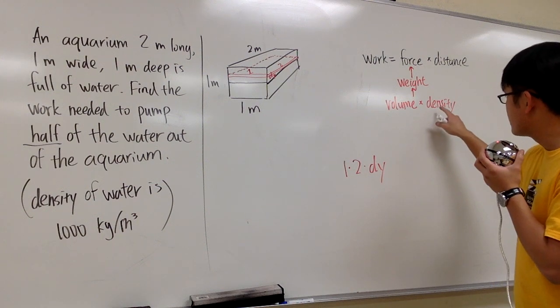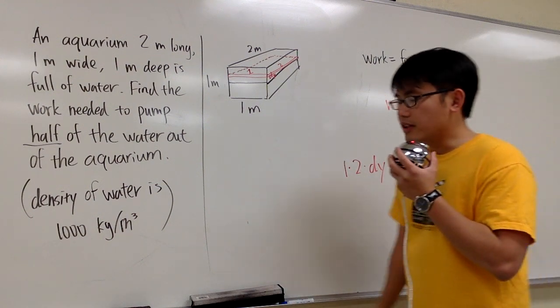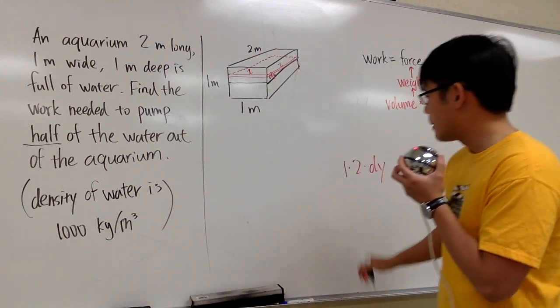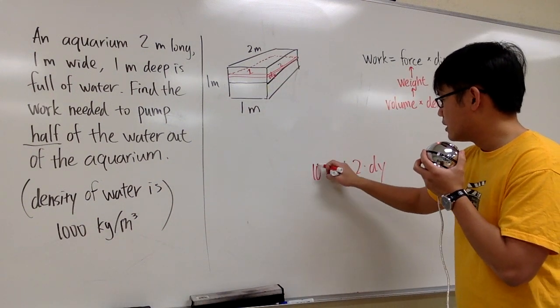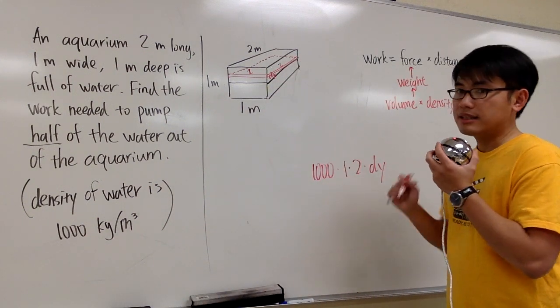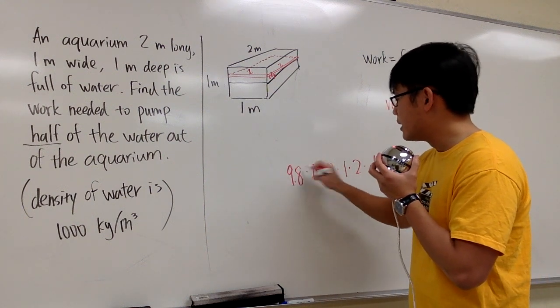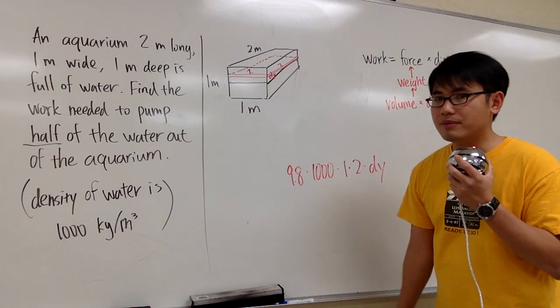That takes care of the volume of that slice. The next thing is the density. For the density, we just need to multiply by 1,000 for the water density, the mass density. We also have to multiply by 9.8 for the gravity, because 1 meter.